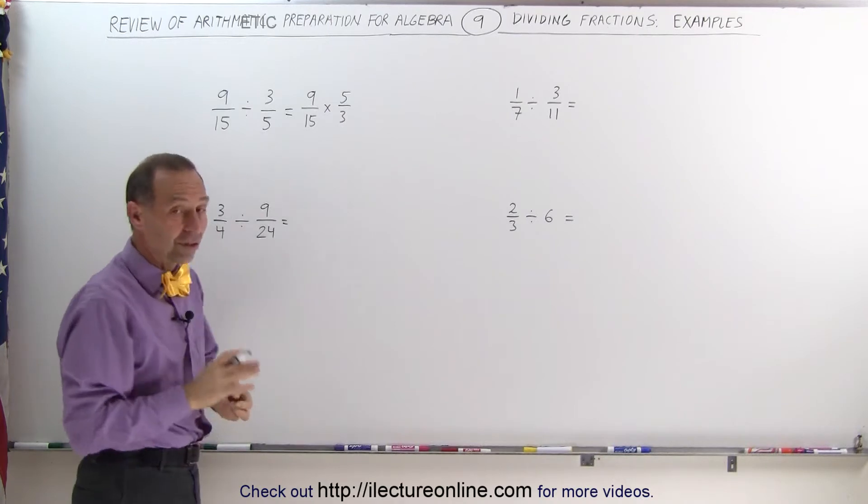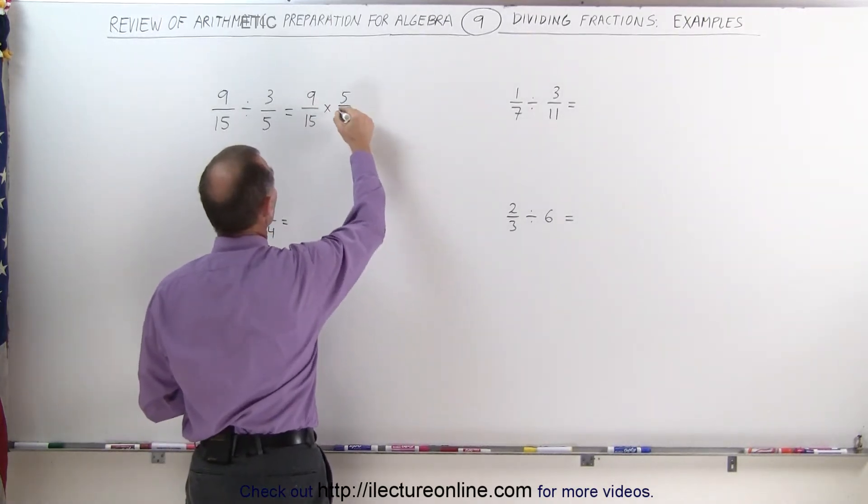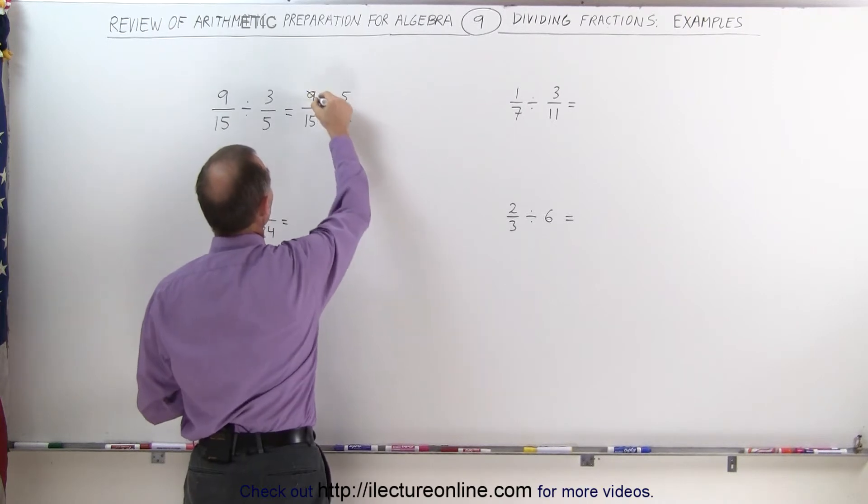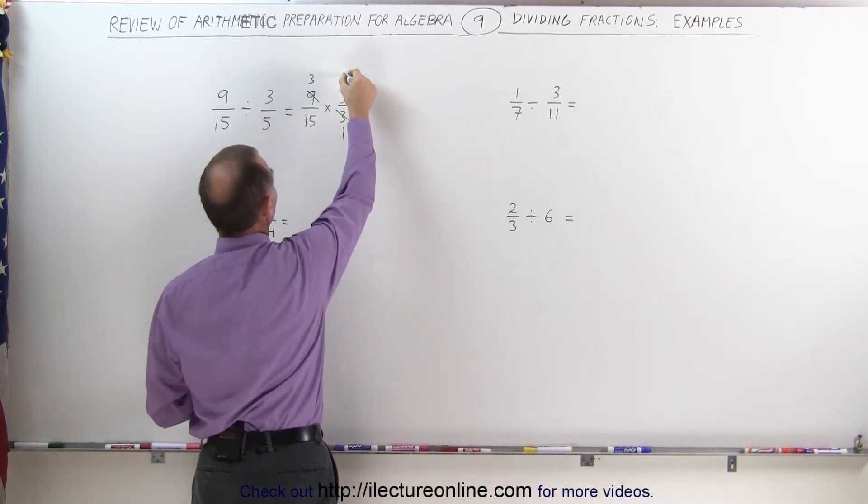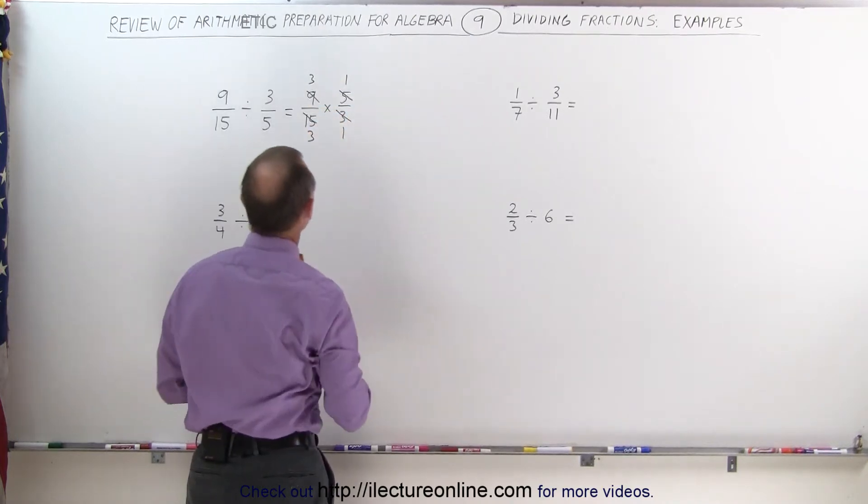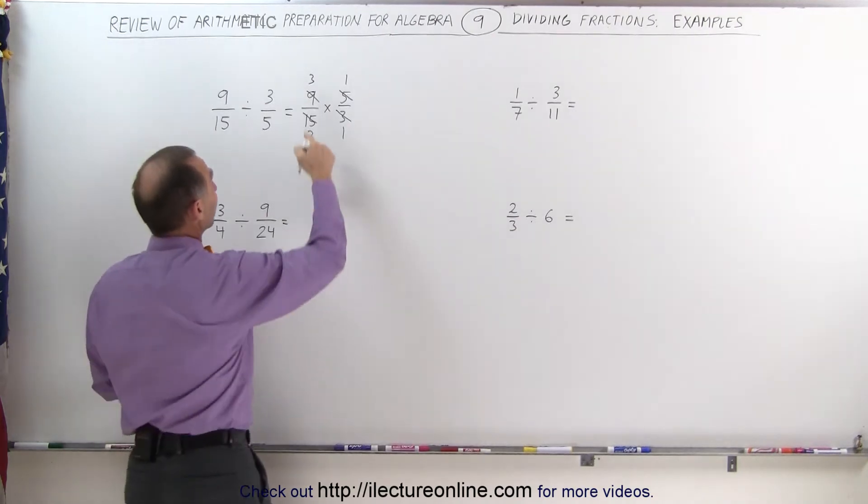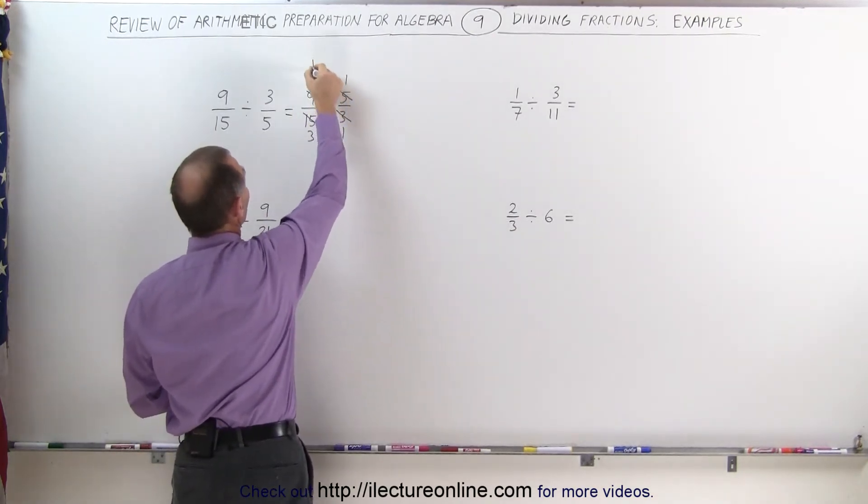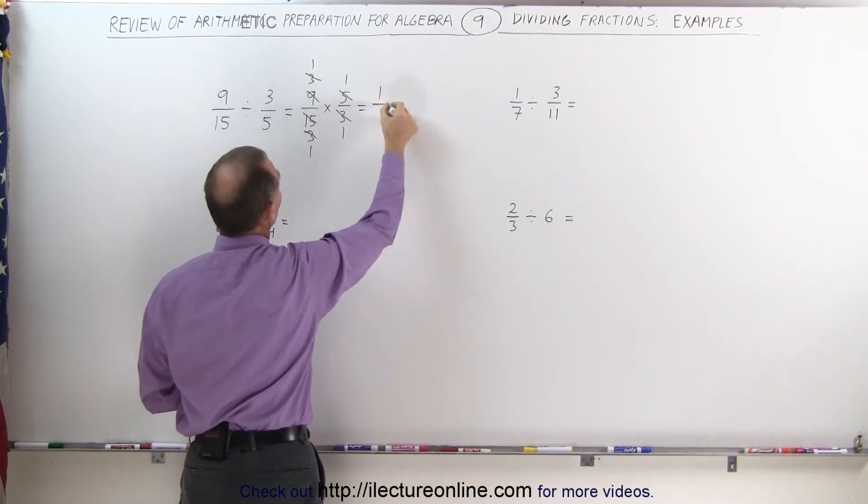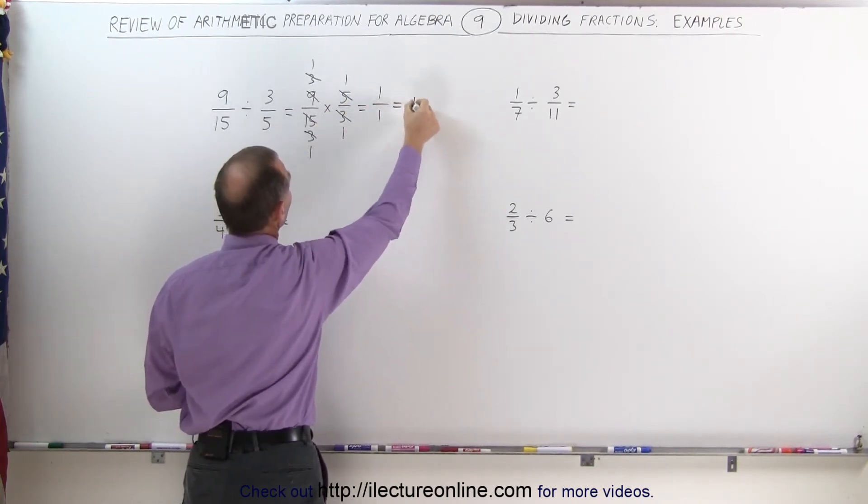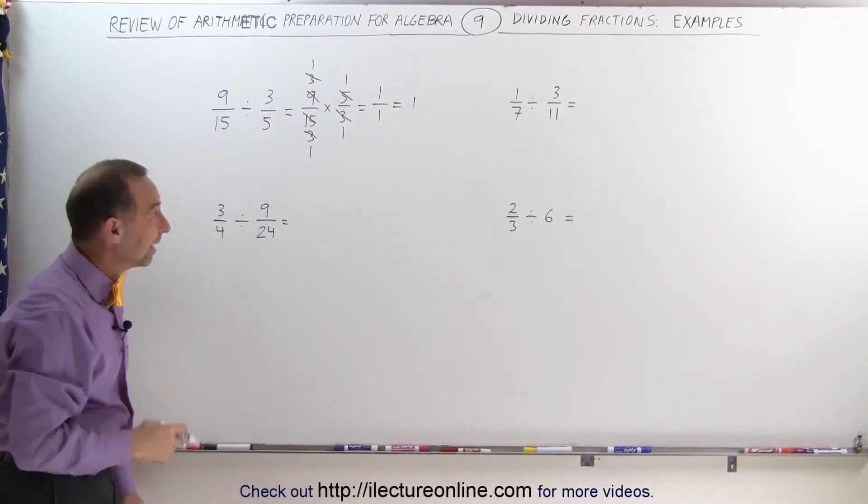Now you can see that you can do some simplification before you multiply things together. We have a 3 and a 9, so 3 divided by 3 is 1, 9 divided by 3 is 3. 5 and 15, 5 divided by 5 is 1, 15 divided by 5 is 3. And you can continue to simplify, because 3 and 3 can be divided by 3, this becomes 1, this becomes 1. And finally, you get 1 times 1 divided by 1 times 1, which is simply 1. So 9/15 divided by 3/5 is equal to 1.